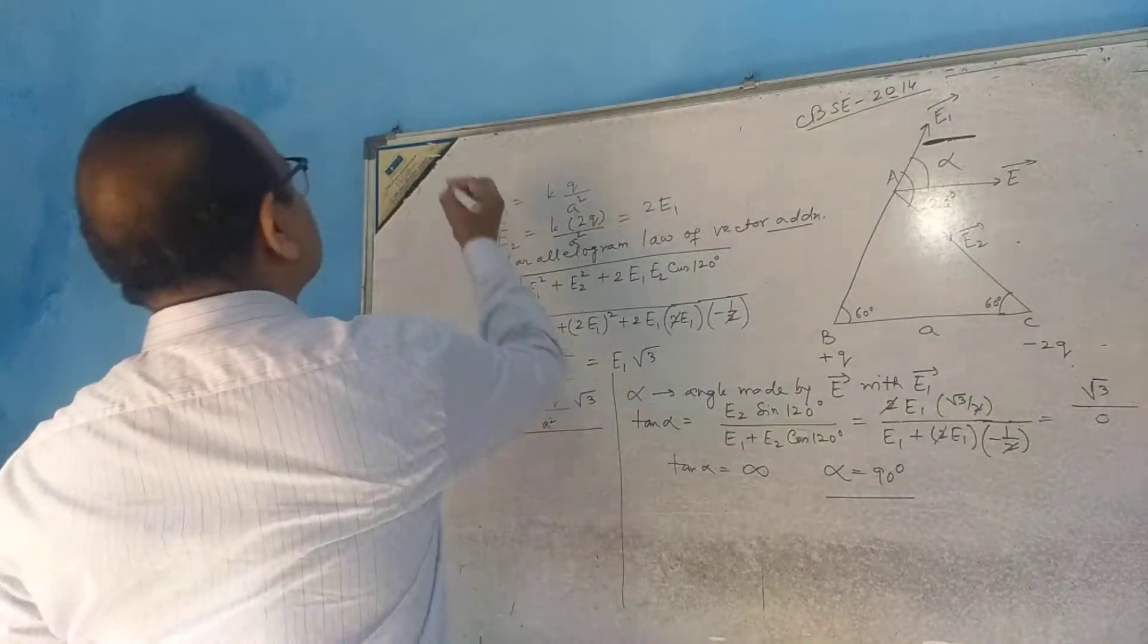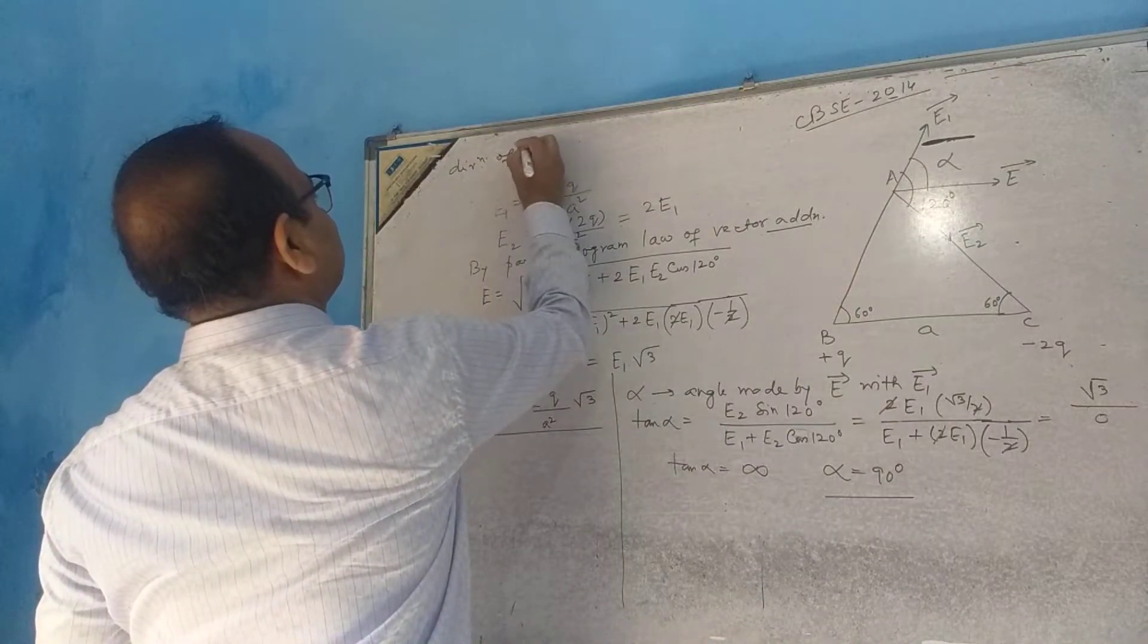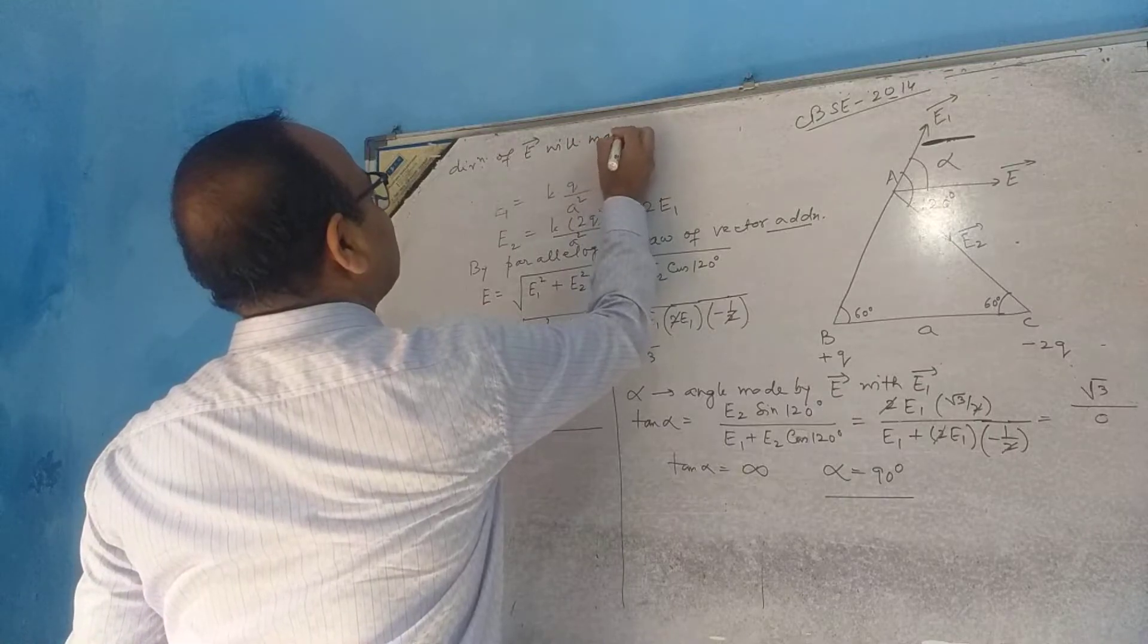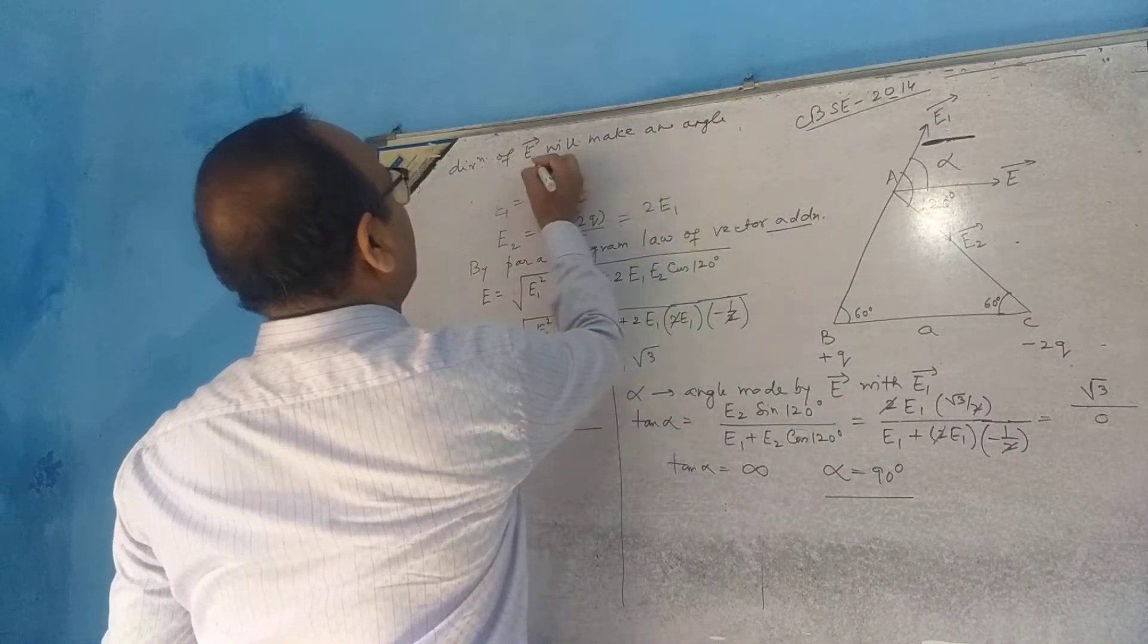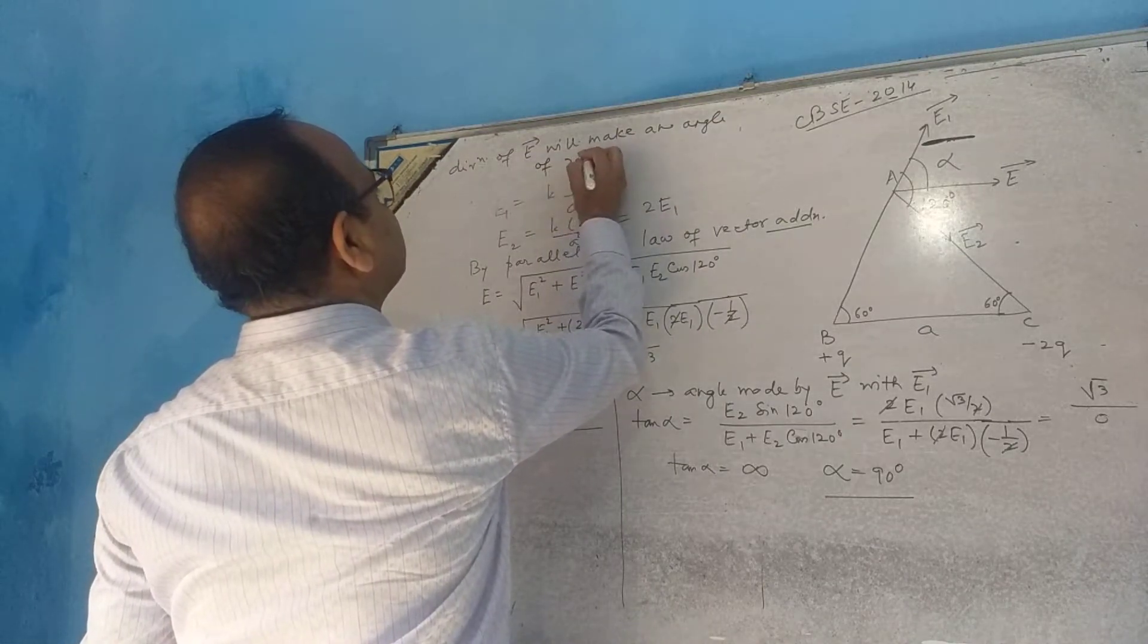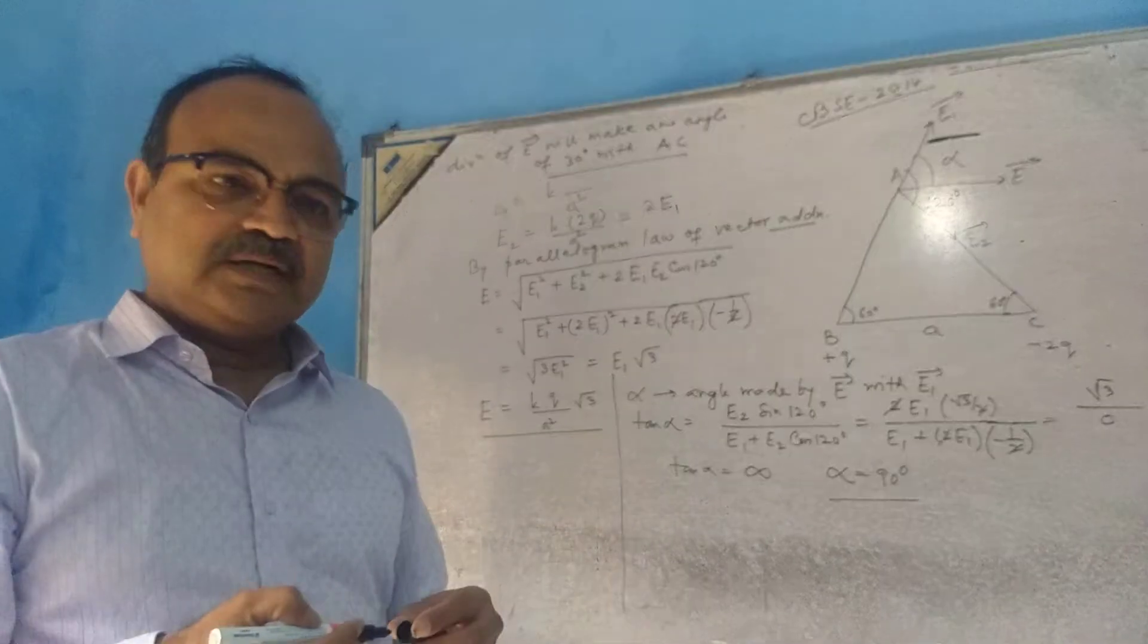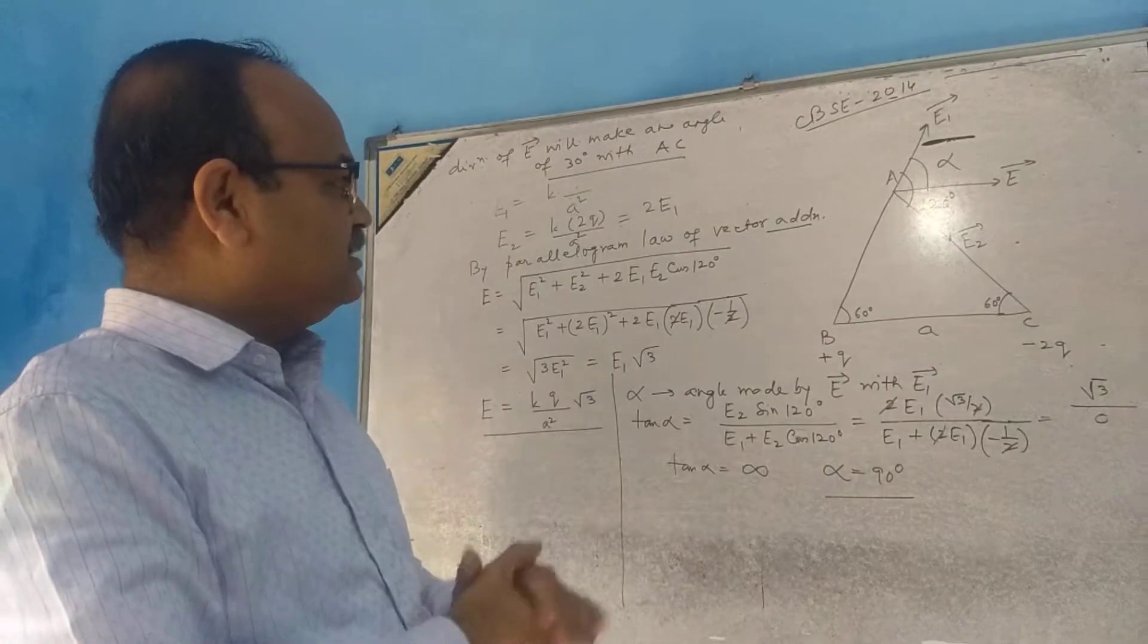So here I write: the direction of E vector will make an angle of 30 degrees with AC. I hope all of you understand it. In this way, in case of a triangle, we have to use this.